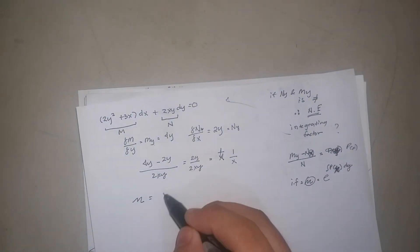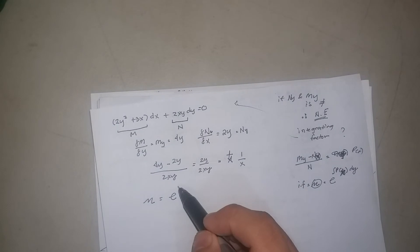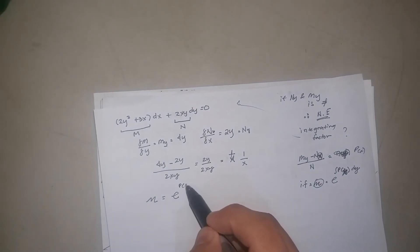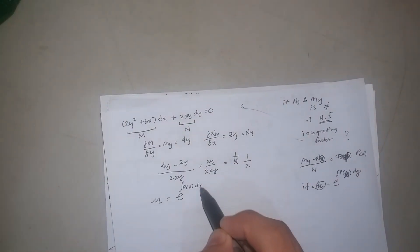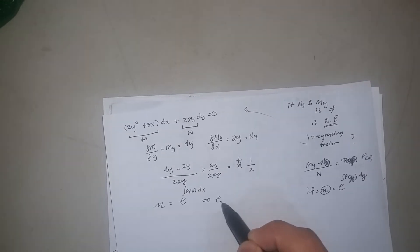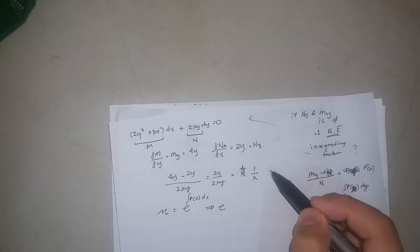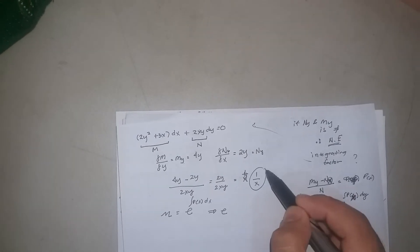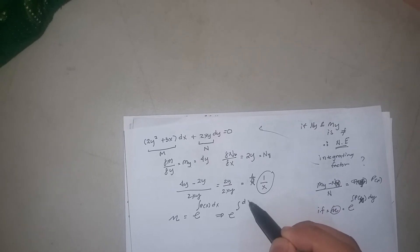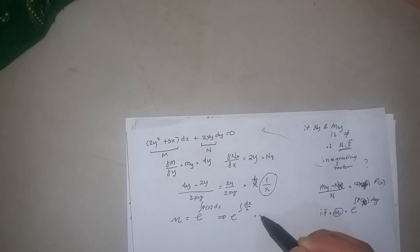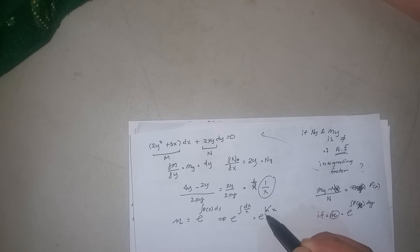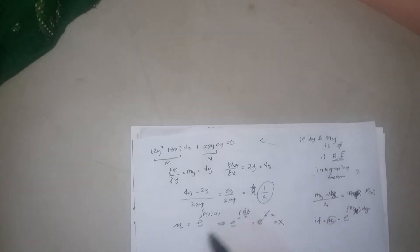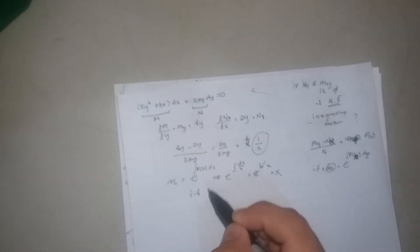Then our integrating factor mu is equals to e raised to integral of P of x dx. Our P of x is this one: integrate dx over x equals e to the ln of x, or cancel, therefore x.